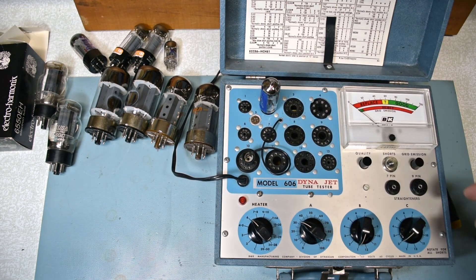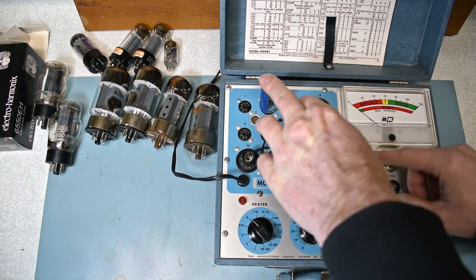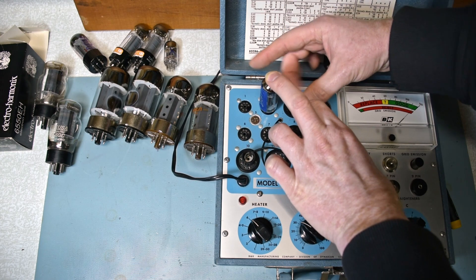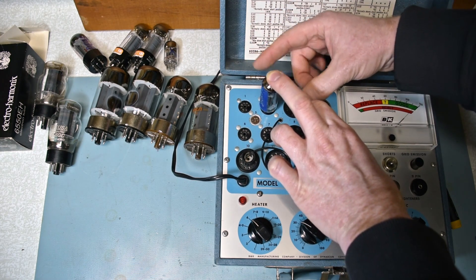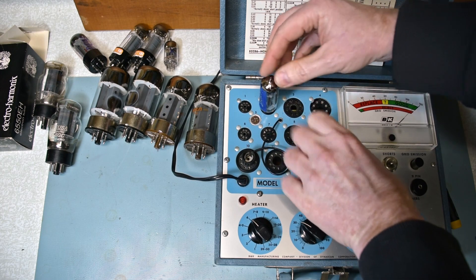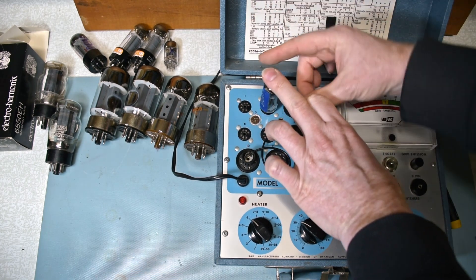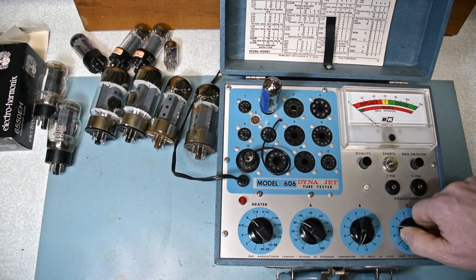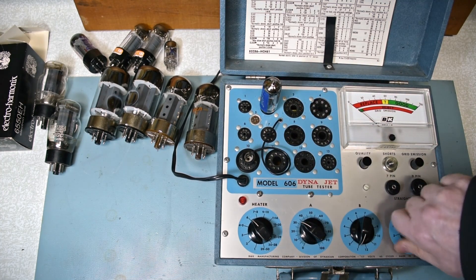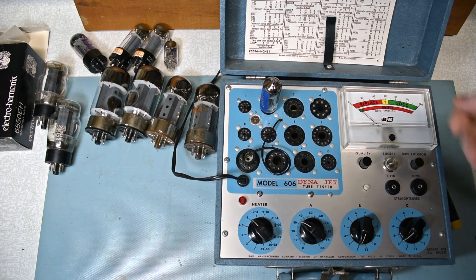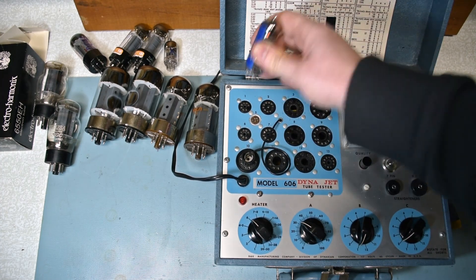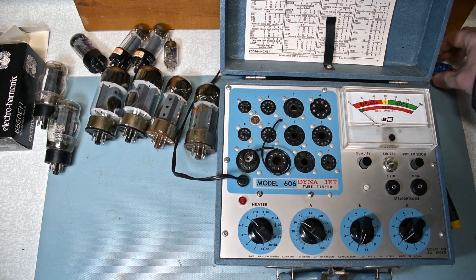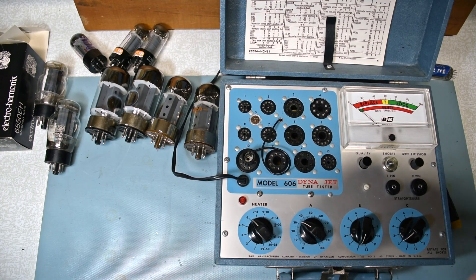So here's a good example of a tube that checks okay in the tester but it's actually not okay. I just know from having it in a guitar amp, and after powering up the amp it would short. Sometimes you can tap on it and make something go wrong. But a good example why a tube tester like this isn't a for sure thing. Just gives you some confidence if it passes.